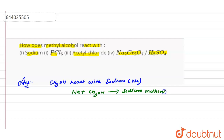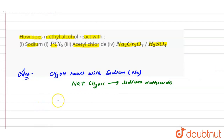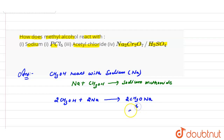Sodium methoxide is formed, and the byproduct is hydrogen gas, which is evolved during the reaction in the form of bubbles. The balanced chemical equation is: 2CH₃OH + 2Na → 2CH₃ONa + H₂. So this is the first reaction — methanol reacting with sodium.